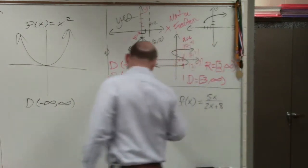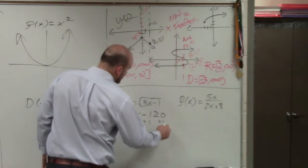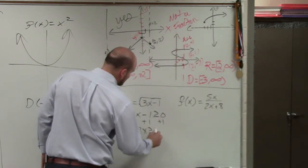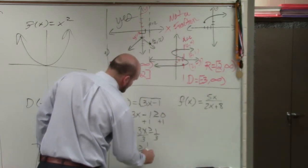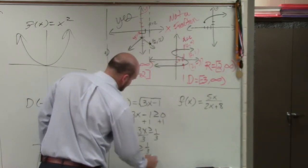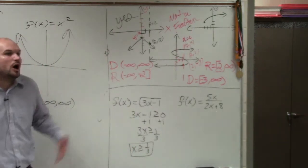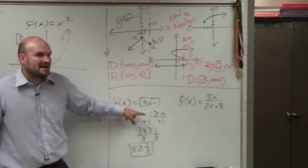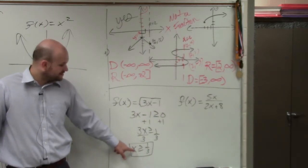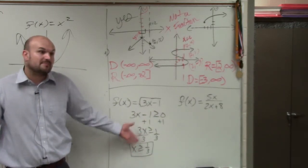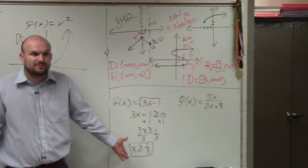So now we just go ahead and solve. So I go add 1. So I have 3x is greater than or equal to 1. Divide by 3, divide by 3, x is greater than or equal to 1 third. So all the values that make this inequality greater than zero are going to be in its domain. So my domain is x is greater than or equal to 1 third.